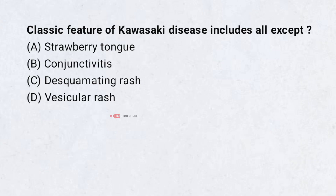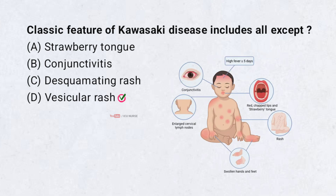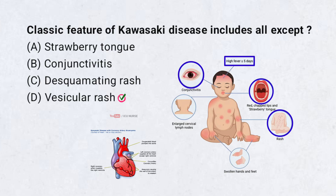Classic features of Kawasaki disease include all except: A. Strawberry tongue, B. Conjunctivitis, C. Desquamating rash, D. Vesicular rash. Correct answer: D. Vesicular rash. Kawasaki disease presents with fever, rash, conjunctivitis, and red tongue. Vesicles are not a feature. Risk of coronary artery aneurysm is serious.